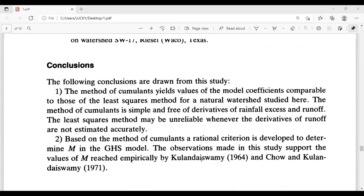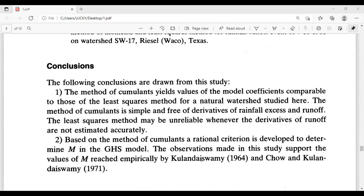And conclusions. The following conclusions are drawn from this study. The method of cumulants yields values of the model coefficients comparable to those of the least squares method, which may be unreliable whenever the derivatives of runoff are not estimated accurately. Based on the method of cumulants, a rational criterion is developed to determine the M in the GHS model. The observations made in this study support the values of M reached empirically by Kulandaiswamy 1964 and Chow and Kulandaiswamy 1971.